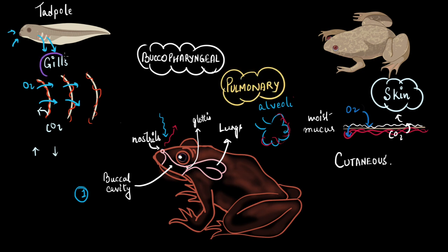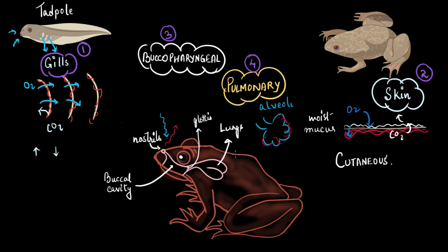And this was the respiration through their lungs which we also call the pulmonary respiration. So, these were the four different types of respiration. Four different mechanisms. One through gills in the tadpole stage, in the larval stage. Then we saw cutaneous respiration that is respiration through skin in adult frog. Then we saw how buccopharyngeal respiration works. And then we looked at the pulmonary respiration in frogs.